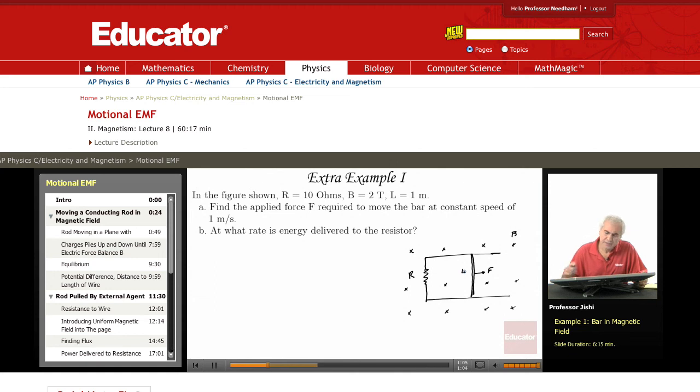So the question is to find the applied force required to move the bar at constant speed of one meter per second. Now if the bar is to move at one meter per second, this means that there is an induced EMF.